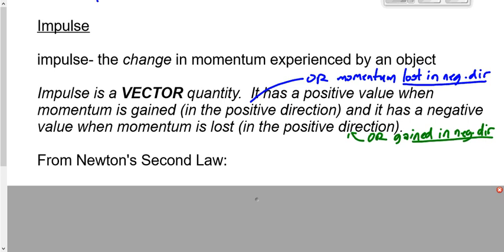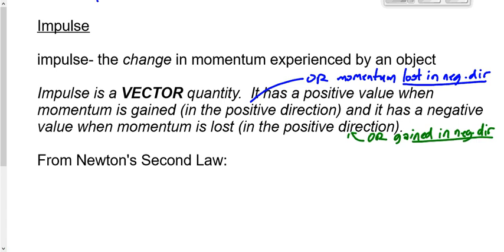What does the equation for impulse look like? I'm going to actually derive it for you — I don't derive a whole lot of equations, but this one I will. It comes from Newton's second law. The first law is the law of inertia: an object at rest stays at rest, an object in motion stays in motion at a constant speed until acted upon by an unbalanced force. The third law is the action-reaction one. The second law is basically F equals M times A.